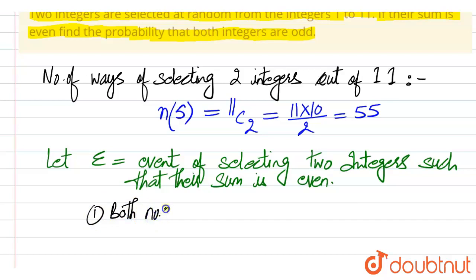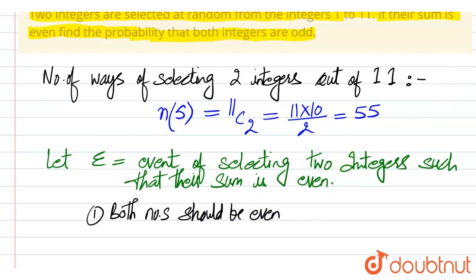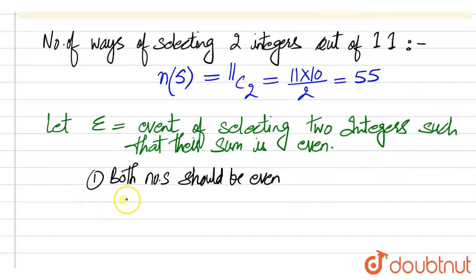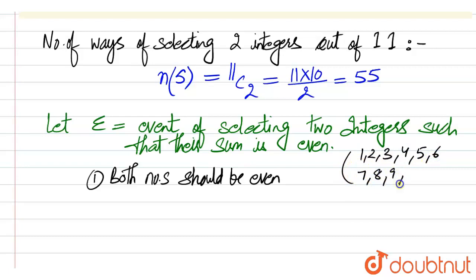For the sum to be even, both numbers should be even. Out of 1 to 11, we have the numbers 1, 2, 3, 4, 5, 6, 7, 8, 9, 10, and 11. The number of even numbers here are 2, 4, 6, 8, and 10 — that is, 5 numbers are even.